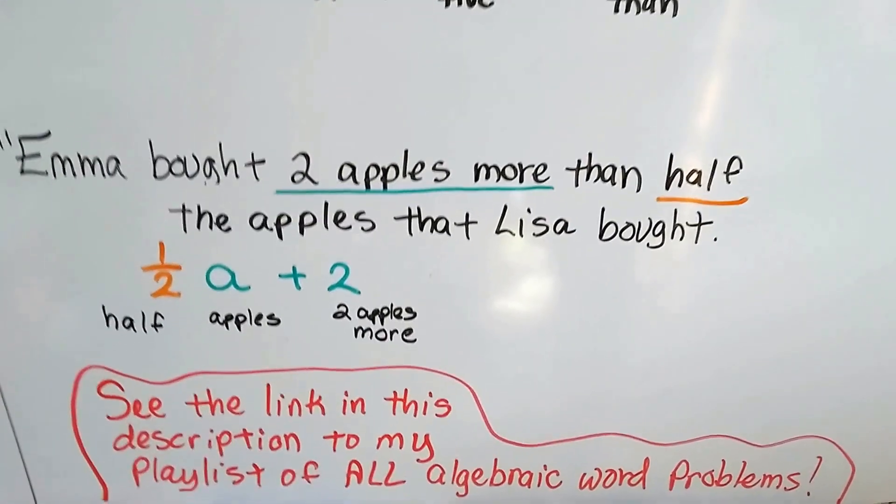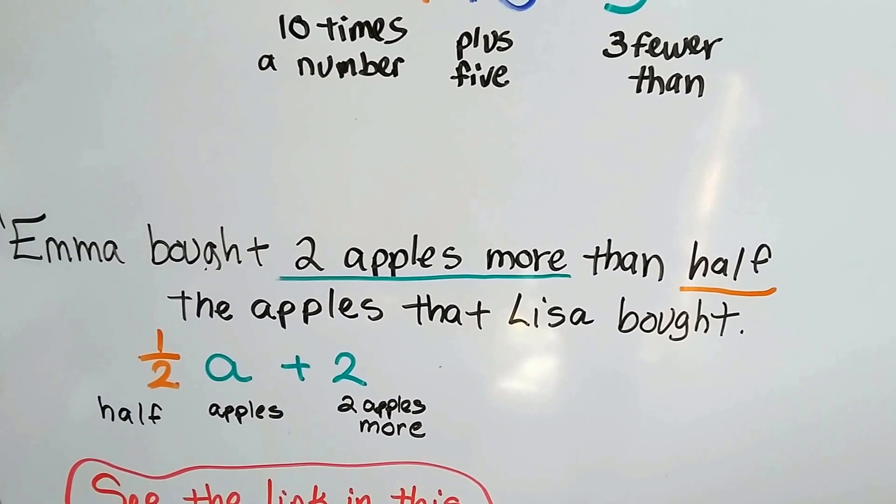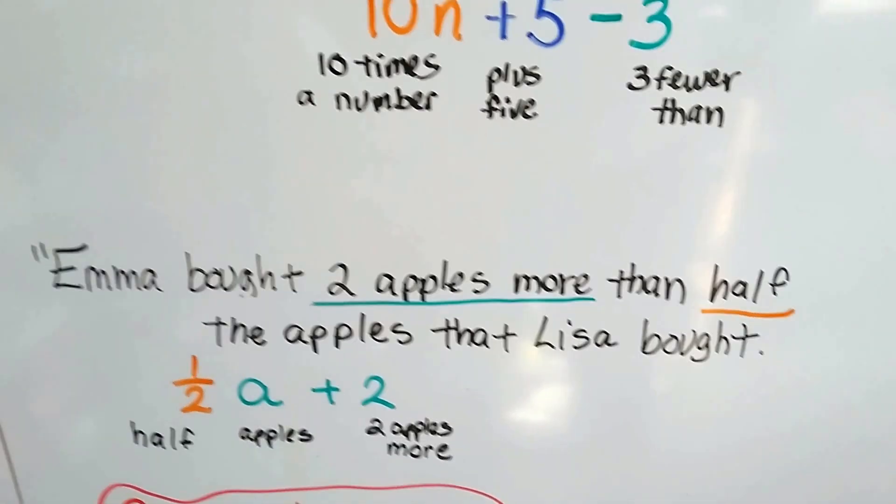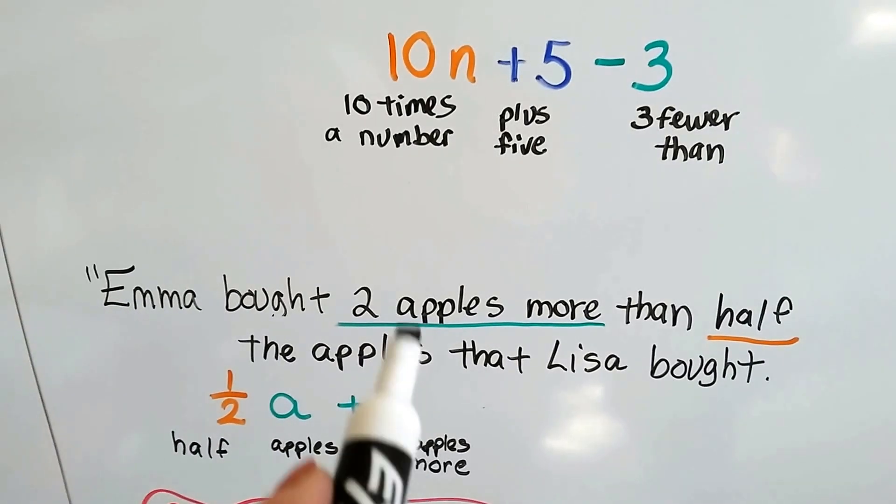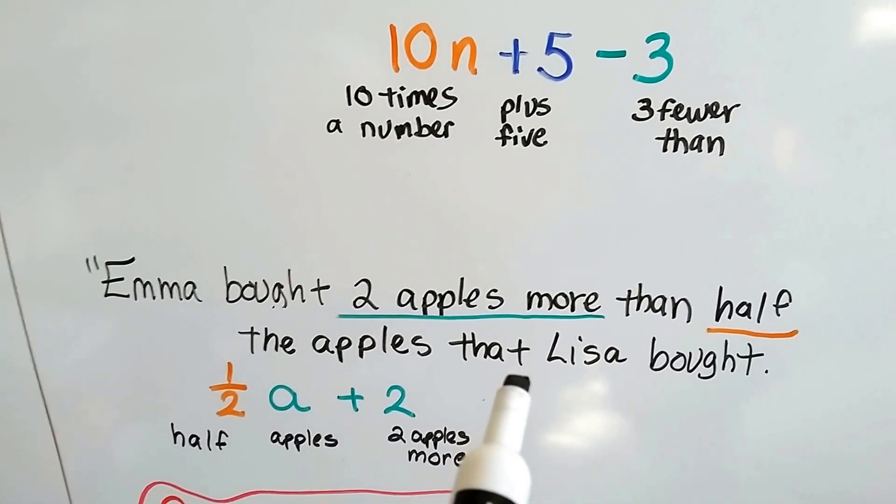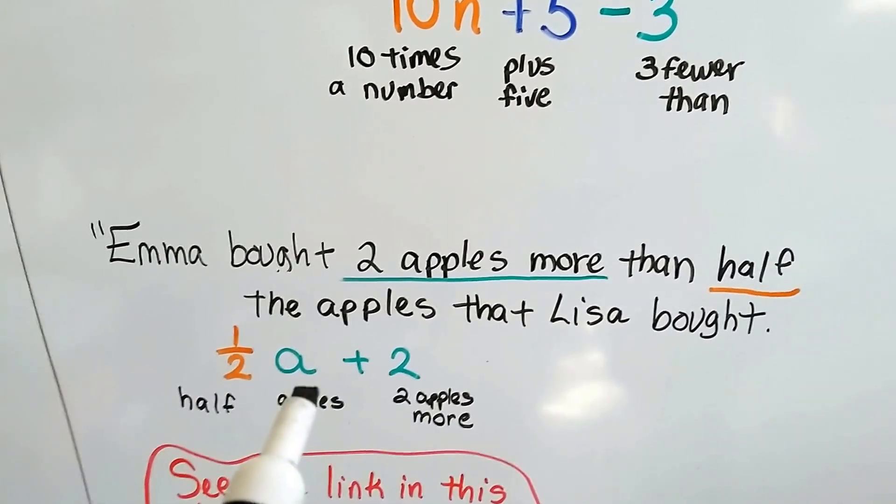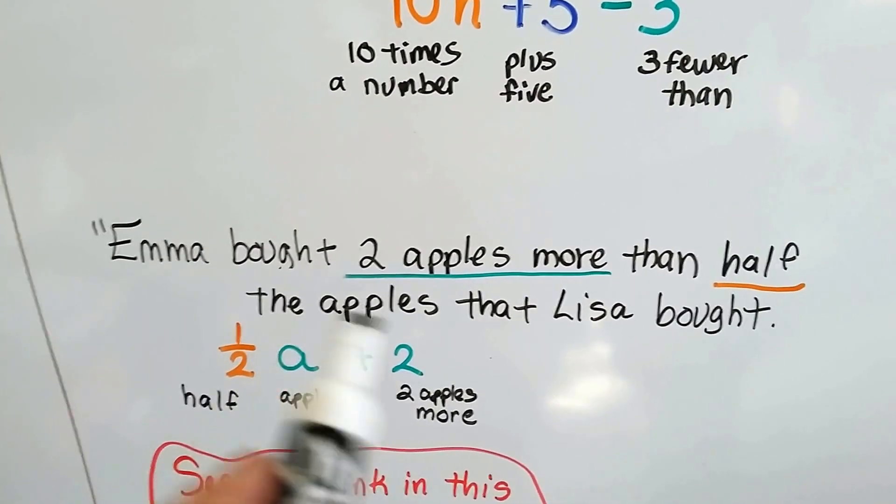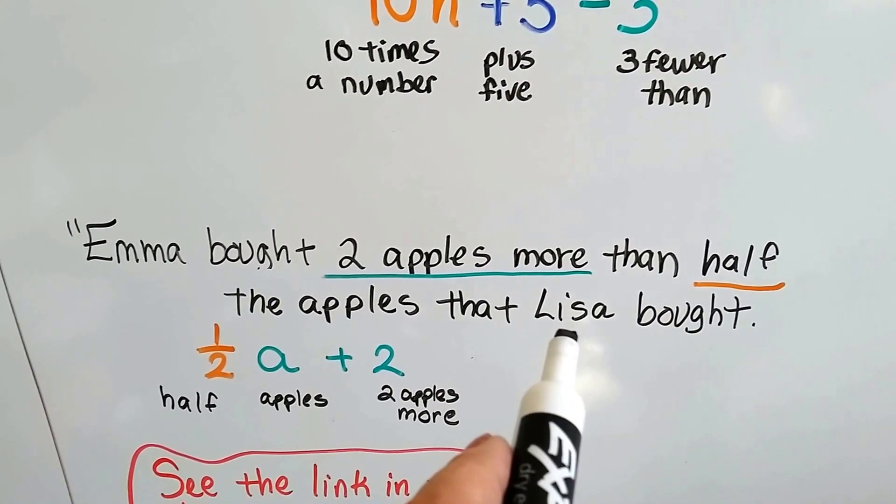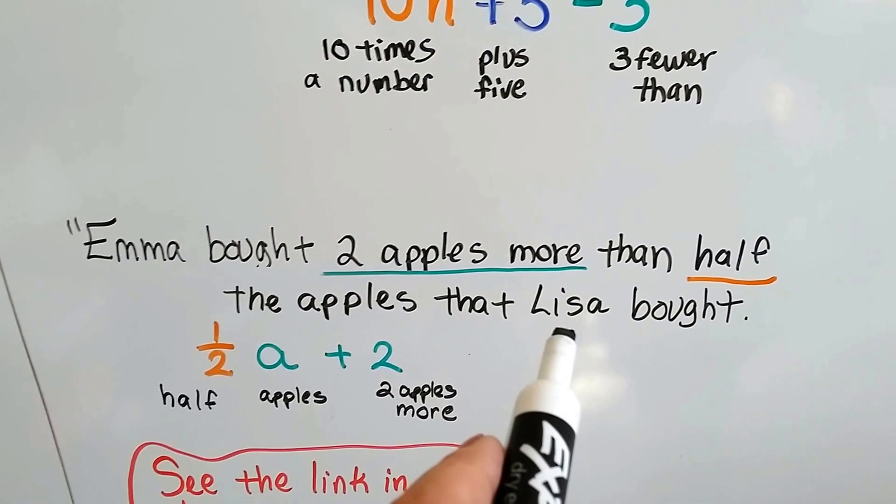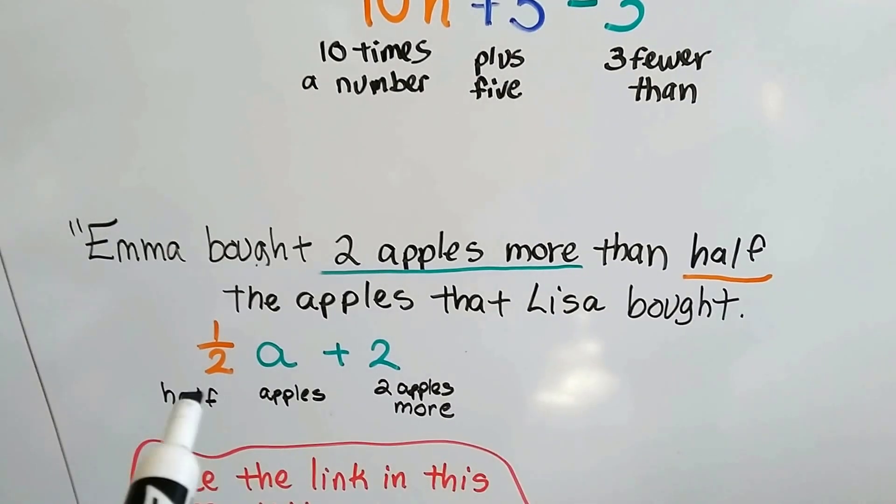What if it said Emma bought two apples more than half the apples that Lisa bought? First, look at this as split into two parts. There's two apples more than half of Lisa's. So half of Lisa's apples plus two would get us the amount that we're looking for. So let's say Lisa had ten apples. Half of that ten would be five. What would be two more than that five? Seven.